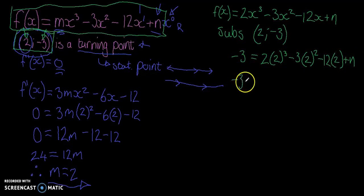Okay, you do have a calculator to do this, but I'm too lazy to get mine out. So 2 cubed is 8 times by 2 is 16. Now 2 squared is 4 times by negative 3 is going to be negative 12. 2 times by 12 is going to be negative 24 plus n.